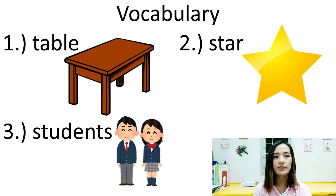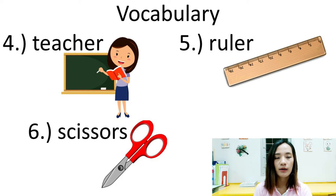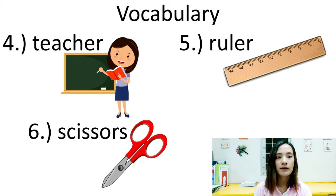We have ten vocabularies here with features and three sentences. Please read with me. Number one: table. Number two: star. Number three: students. Number four: feature. Number five: ruler. Number six: scissors.